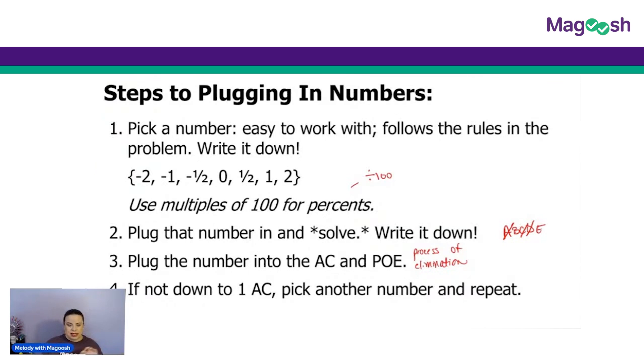Still eliminate the ones that didn't match. Those are eliminated forever. Pick a different value for the variables and repeat the process. It'll be faster the second time because you already know what the calculations are like. And only test the answer choices you haven't eliminated yet. So if that happens, there's your surefire way to get a right answer.